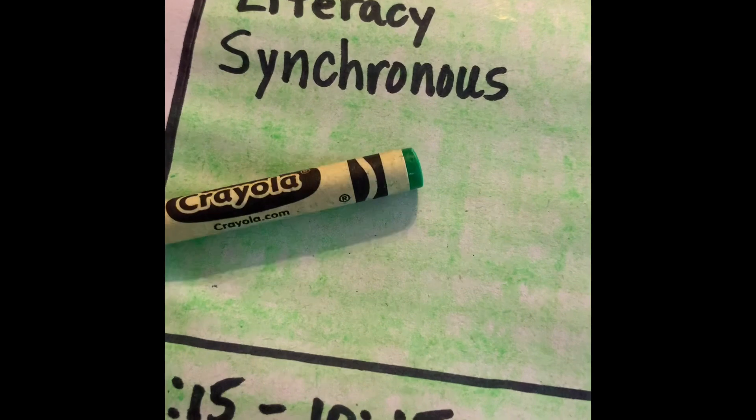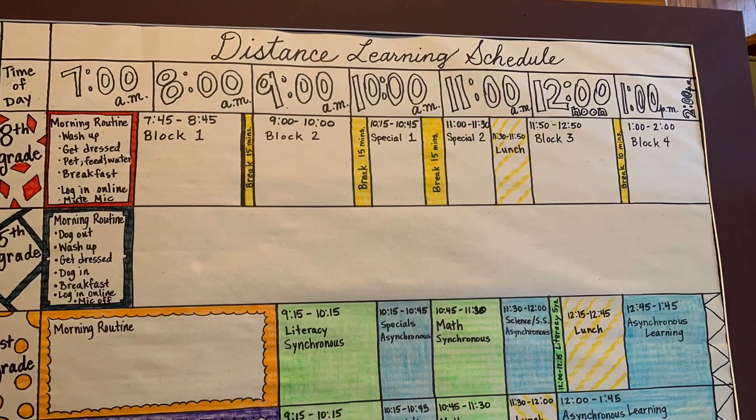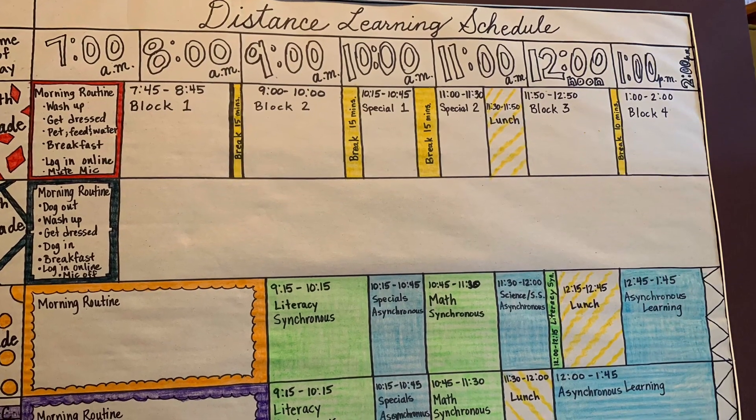Color coordinating synchronous learning: screaming green reminds us when it's green, go to your screen, and other colors like blue are good to remind us we don't need to be on the computer live with our teacher.